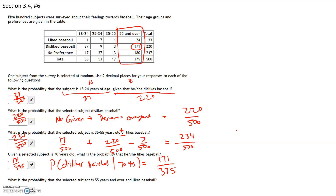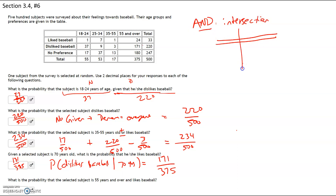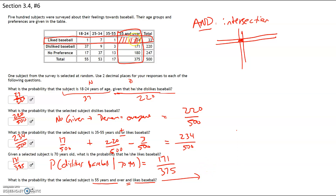Lastly, what is the probability that the selected subject is 55 years and over and likes baseball? The word 'and' is an intersection. If you think about the intersection of two streets, it's where the first street and the second street cross. So we're looking for the intersection of 55 and over and likes baseball — they intersect right there at 24. Because there's no given, the denominator is going to be everybody, so the answer is 24 out of 500.